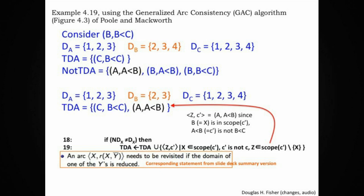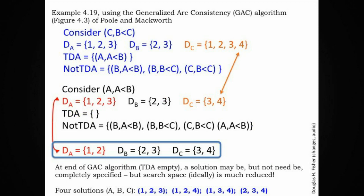After reducing the domain of b, we ask: does this have new implications for the domain of a given a less than b? The constraint-variable pair a, a less than b is highlighted in black and moved from not-TDA back onto the TDA list so we can reconsider it. Next, removing the pair for b less than c on c: if c is 4, b could be 2 or 3, so c equals 4 stays. If c equals 3, b could be 2, so that's valid. But if c equals 2, there is no value in the domain of b properly less than 2, so 2 is removed from c's domain. Likewise, 1 is removed from the domain of c.